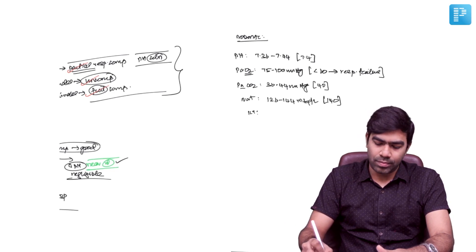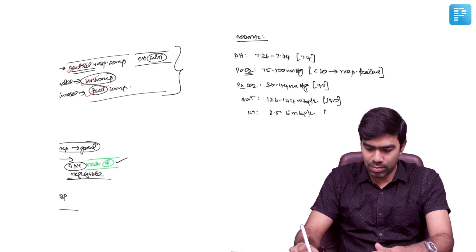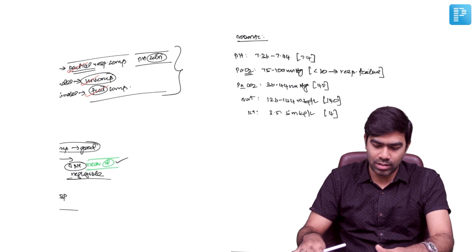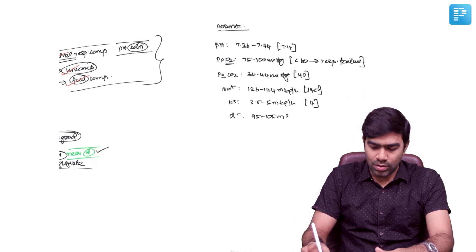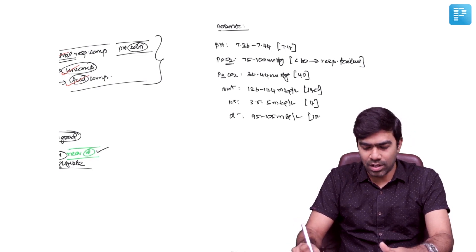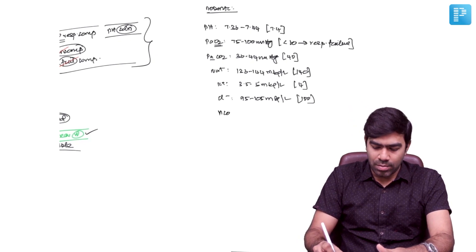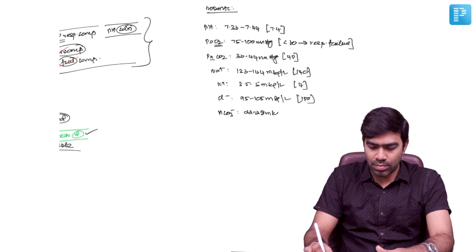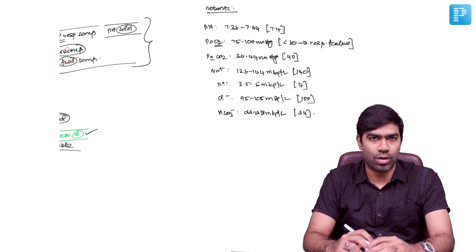Potassium is 3.5 to 5 milliequivalents per liter, or 3.5 to 5.5 milliequivalents per liter. Average, you can take it as 4 milliequivalents per liter. Chloride normal value is 95 to 105 milliequivalents per liter, average is 100. And next is bicarbonate. Bicarbonate normal value is 22 to 28 milliequivalents per liter. Different textbooks will give different values, but average is going to be 24, which is more important.